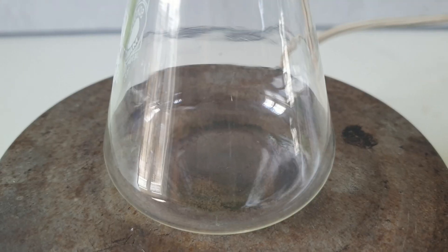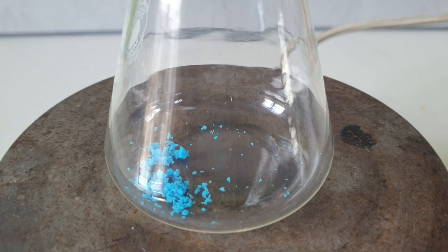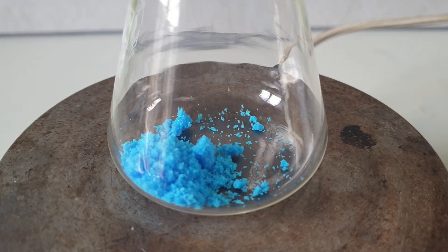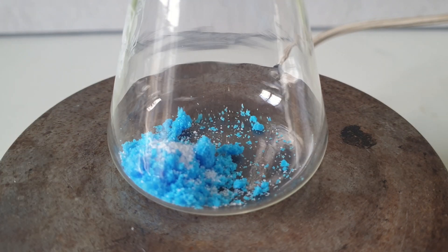To make it I added 4.15 grams of copper sulfate pentahydrate and 2.5 grams of glycine to an Erlenmeyer flask.